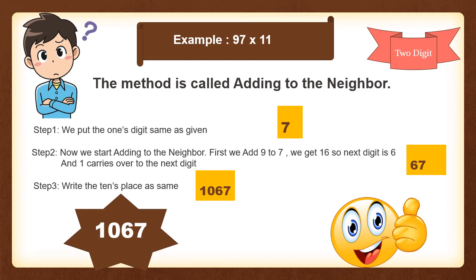The 1 will be carried over to 9. In step 3, we write the 10s place — but the 10s place was 9, and when we add the 1 carry over it becomes 10. So the answer is 1067.